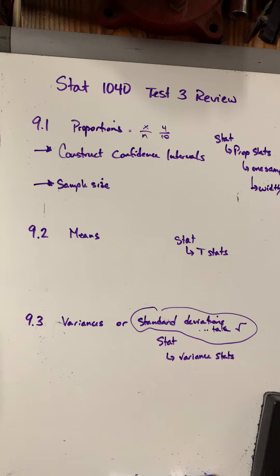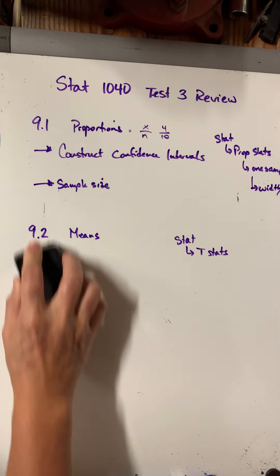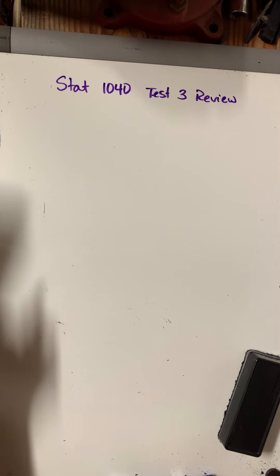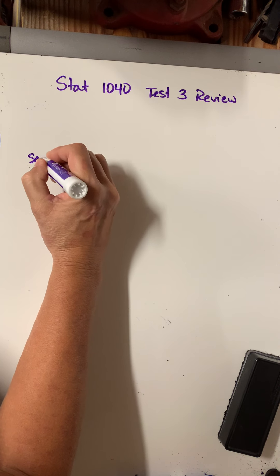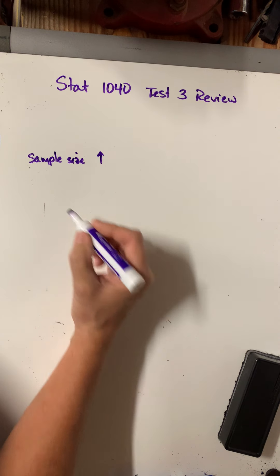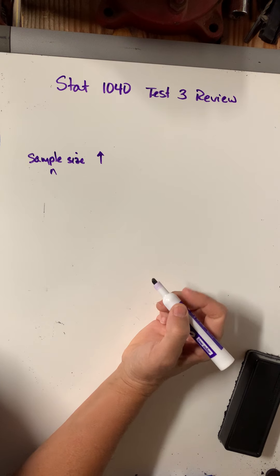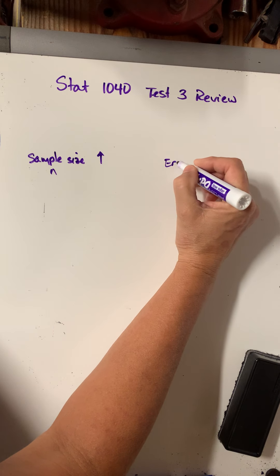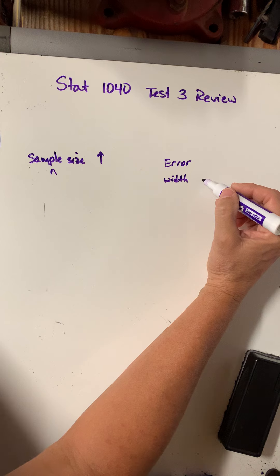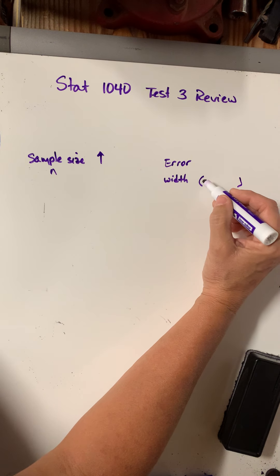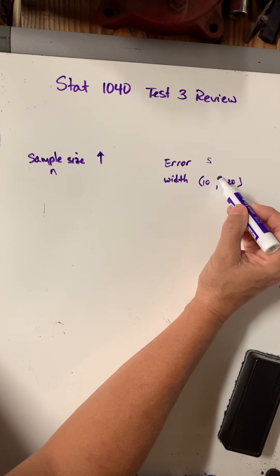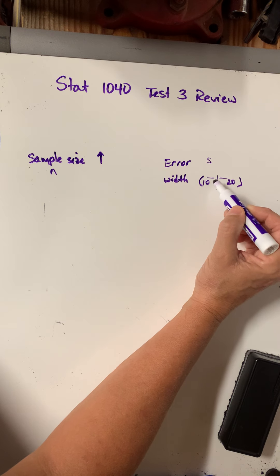The last thing I want to talk about is this issue of relationships. If my sample size increases — so n goes up — what can I say about my error or my width? The width refers to the interval — for example, from 10 to 20, the middle is 15, and the error is 5. The error is just the distance from the middle to either side.